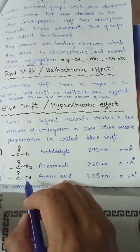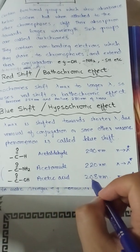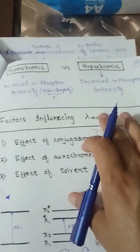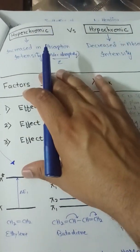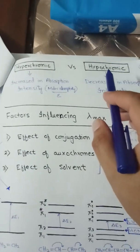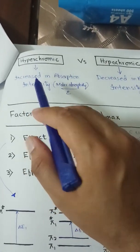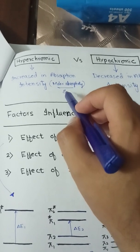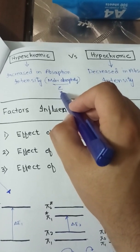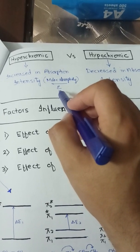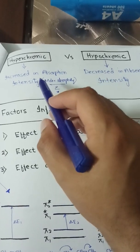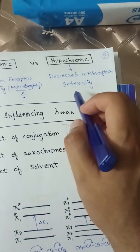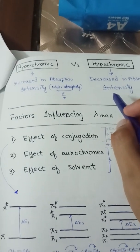Similarly, if the hydroxyl group is attached it is called acetic acid, and its lambda max decreases again due to pi to pi star transition. Hyperchromic effect is an increase in absorption intensity, i.e., an increase in molar absorptivity (epsilon), which is observed in Beer-Lambert law as epsilon·c·l. Epsilon is molar absorptivity and it represents the intensity of the peak. Hypochromic effect is a decrease in absorption intensity.